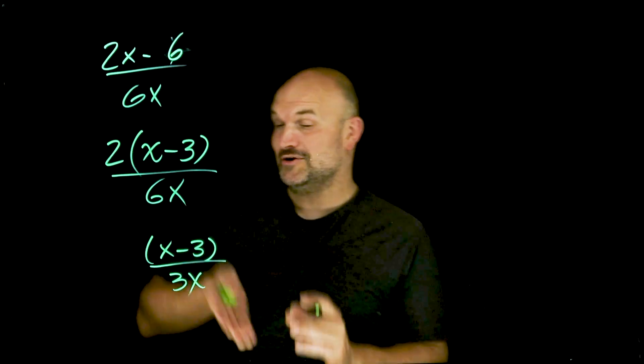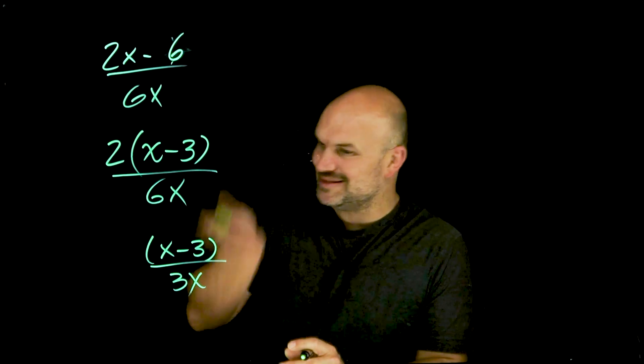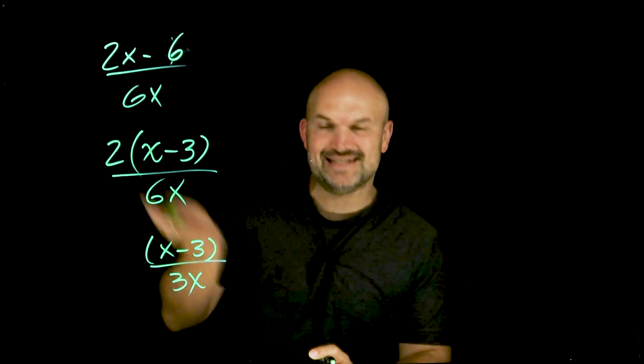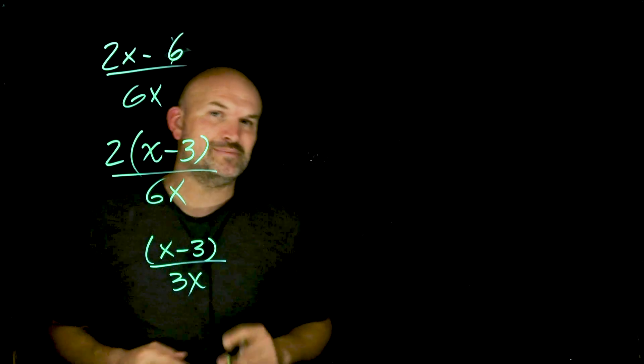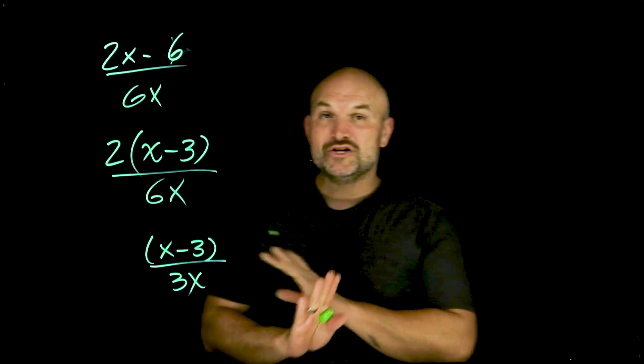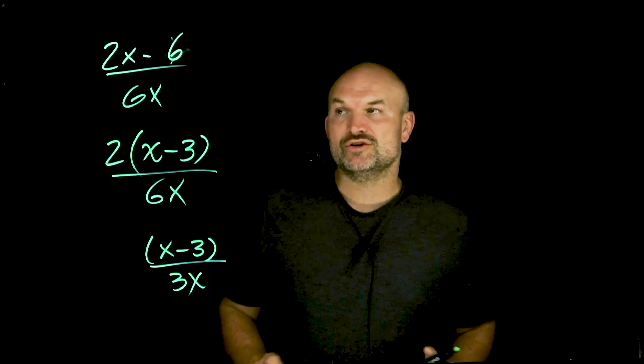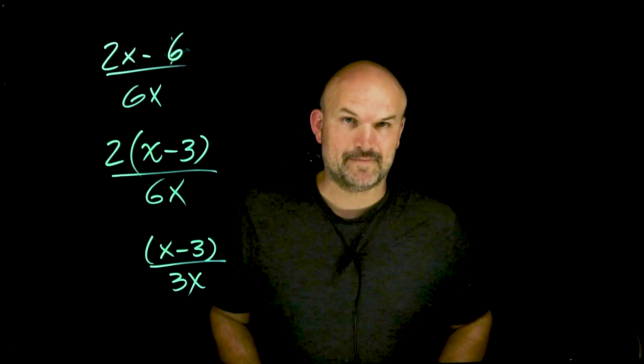Now I can see that I can reduce two over six to one-third. So I'm left with the expression (X minus 3) divided by 3X. And again, even though you see a three and an X in both numerator and denominator, these terms are separated by subtraction, so we can no longer further simplify.